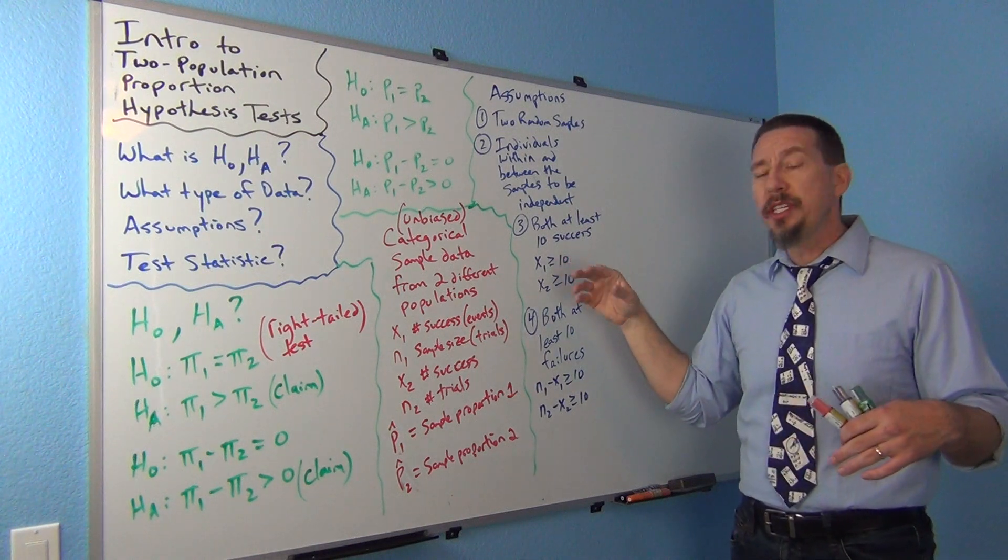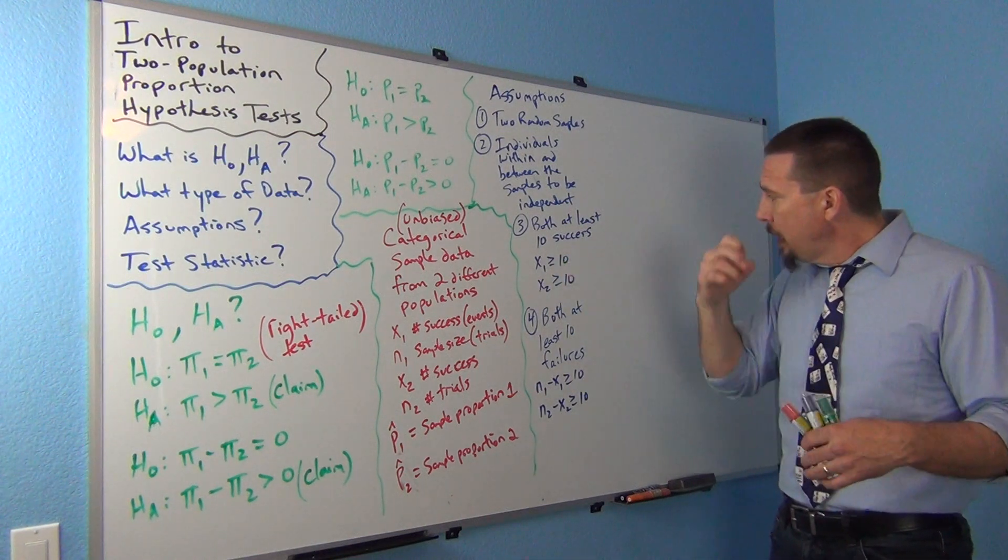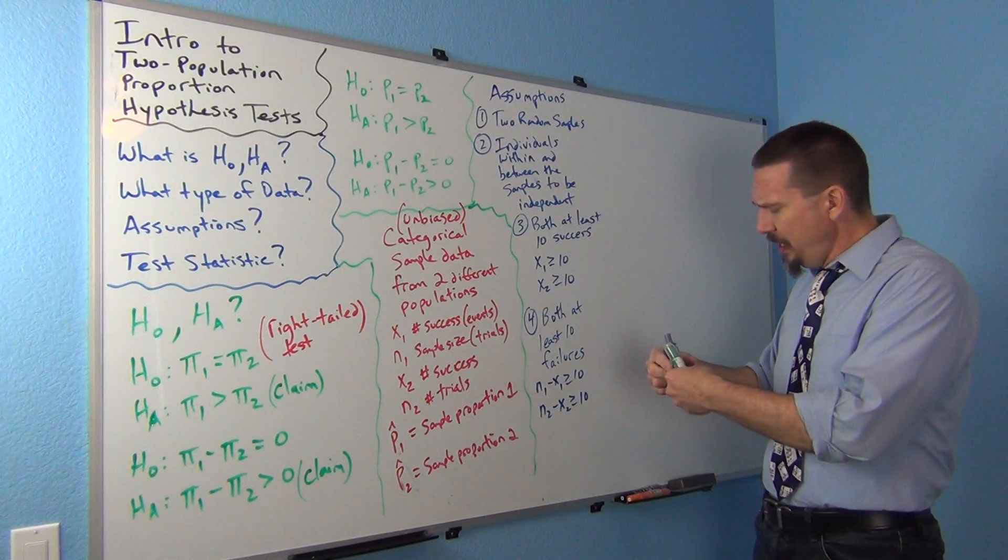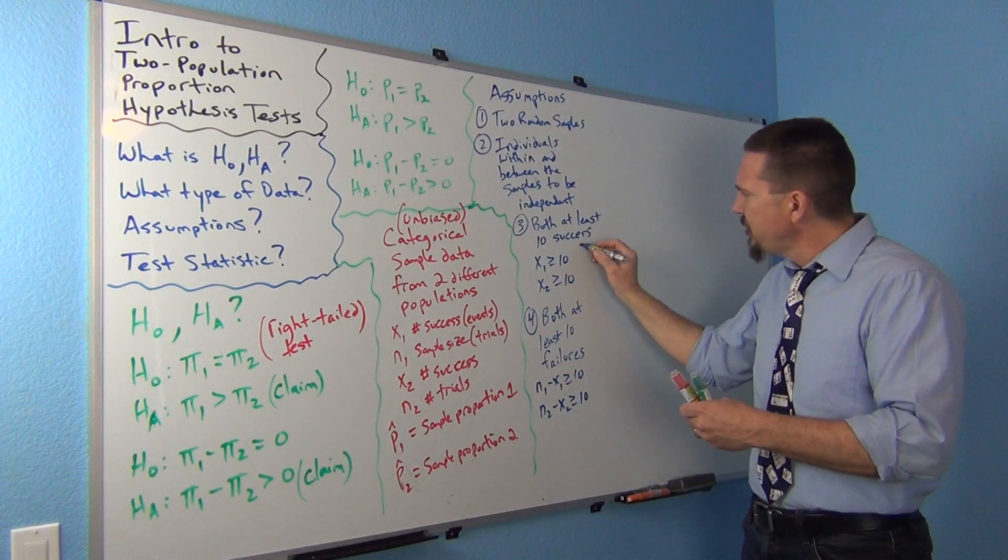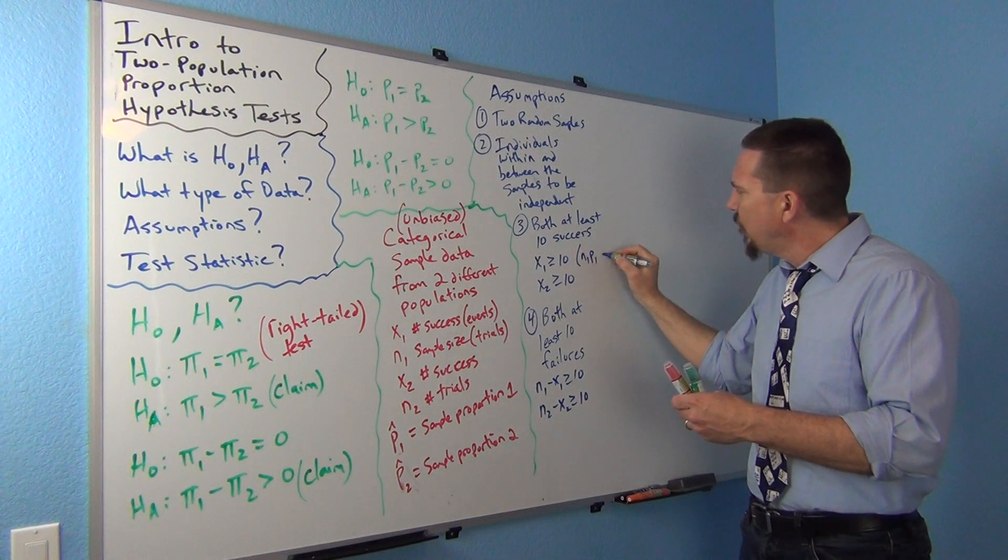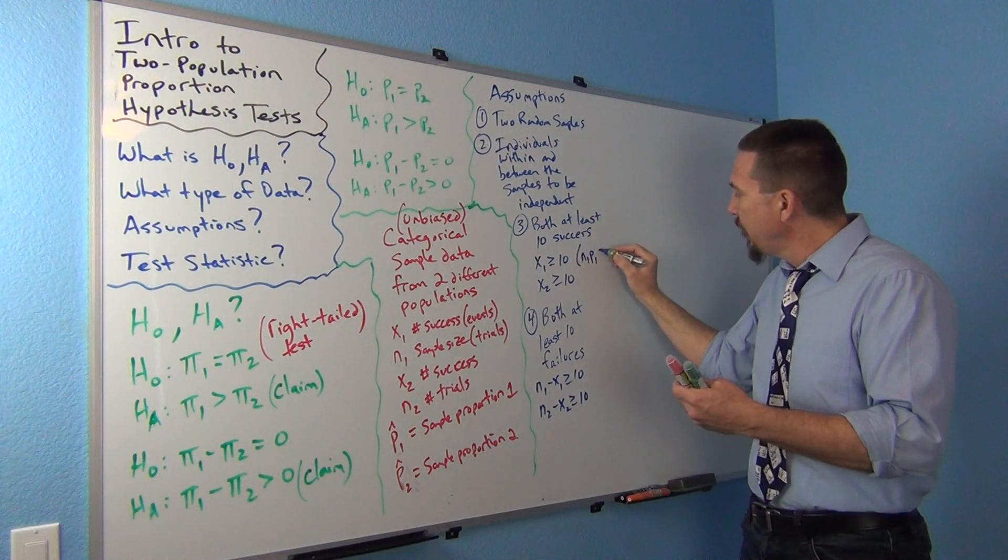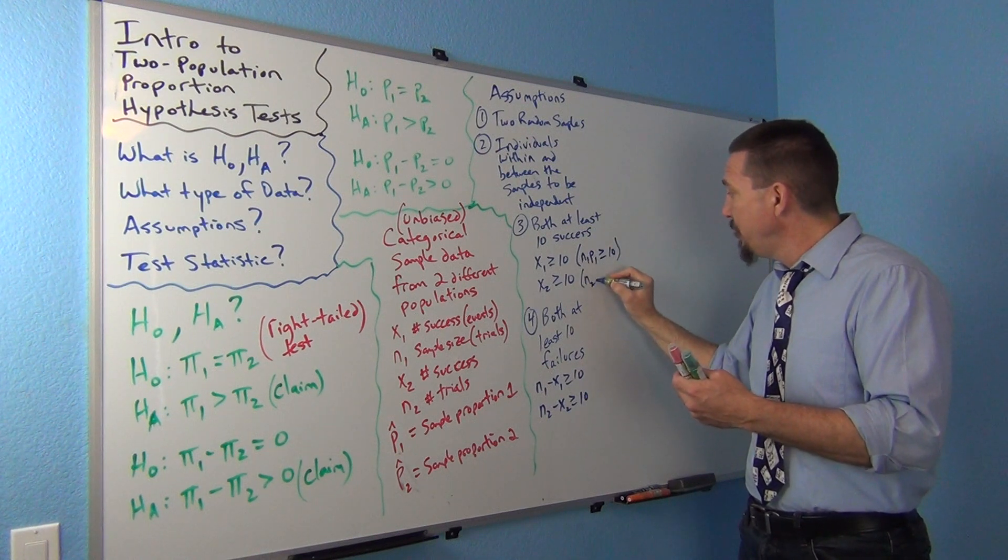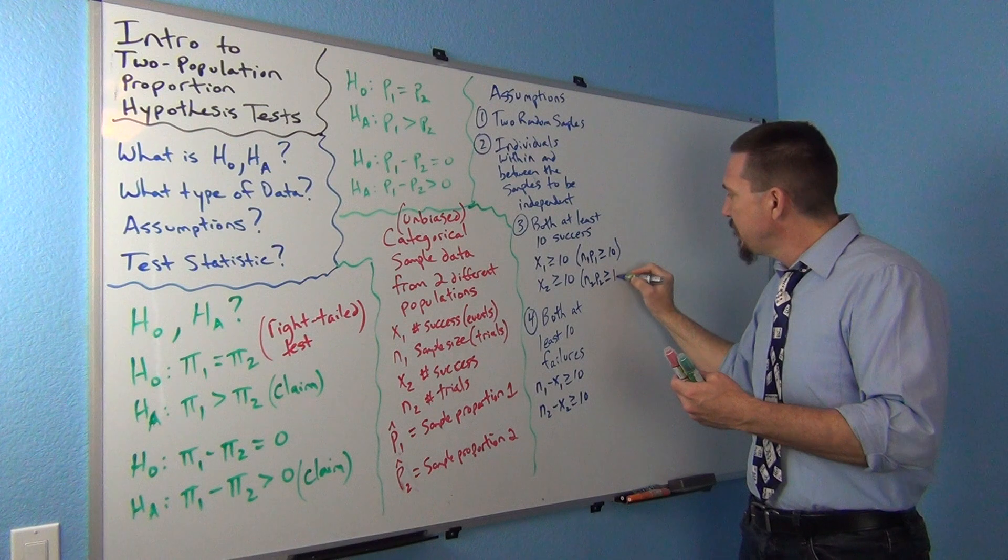You know, so you'll see sometimes other formulas. Like, this one: sometimes you'll see n1 times p1 is greater than or equal to ten, n2 times p2 is greater than or equal to ten.